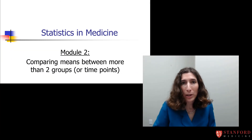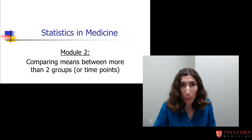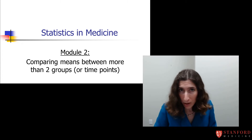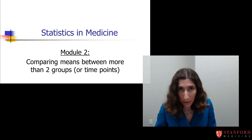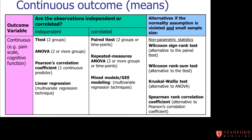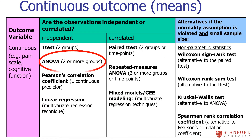In this next module, I'm going to tell you about the tests that are used to compare means between more than two groups or more than two time points. I'll start with the one-way ANOVA test. This is a test that's used to compare means — continuous outcomes — between two or more independent groups.